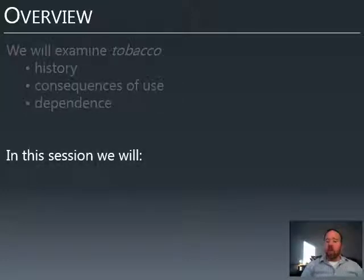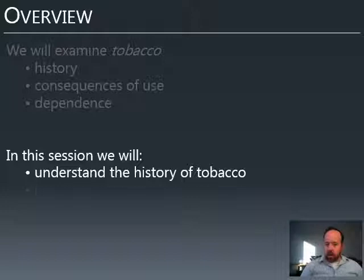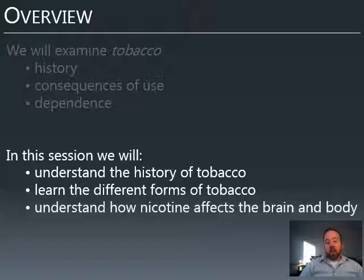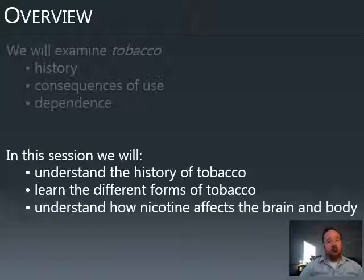In this session in particular, we'll focus on the historical end, as well as the different forms of tobacco. There are different ways of using tobacco, and they vary throughout history as to which is more popular. The form also determines how nicotine is absorbed into the body and some of the long-term health consequences. Different forms have different consequences for long-term health. We'll also talk about how nicotine affects the brain and why.